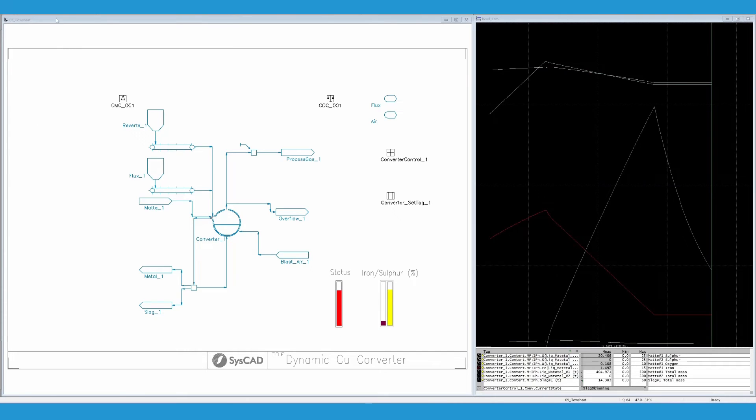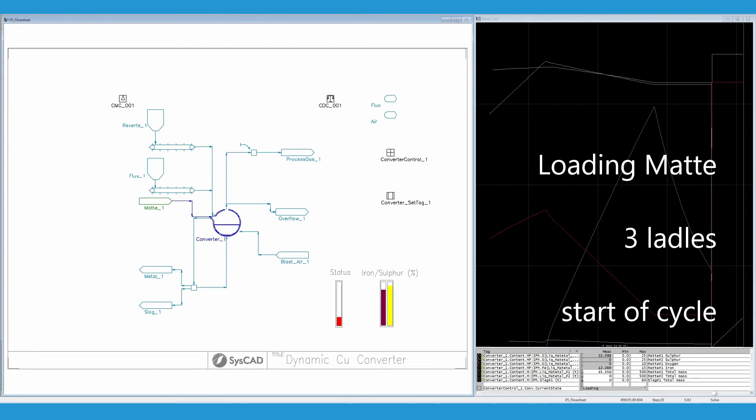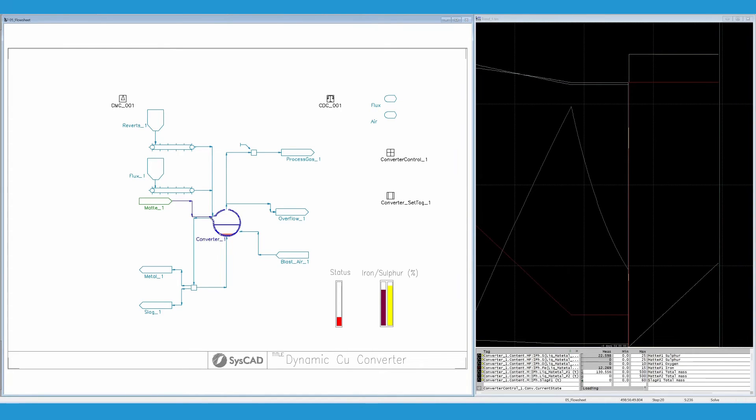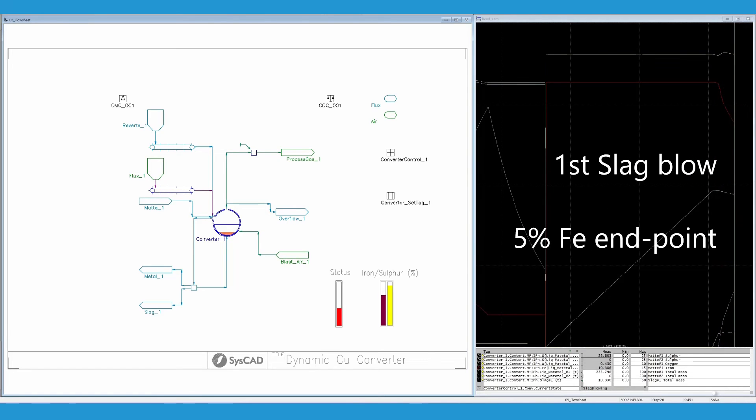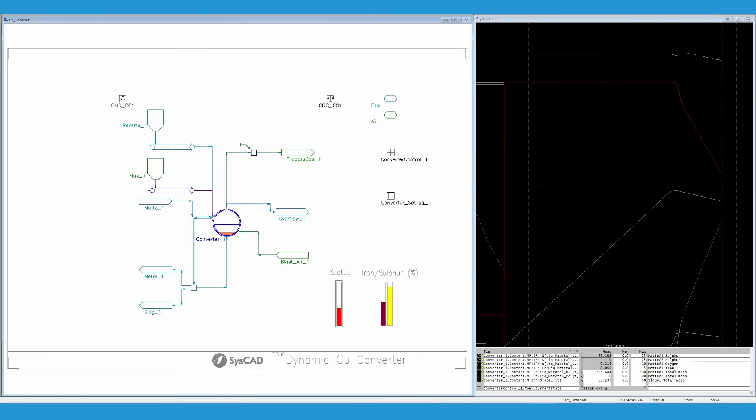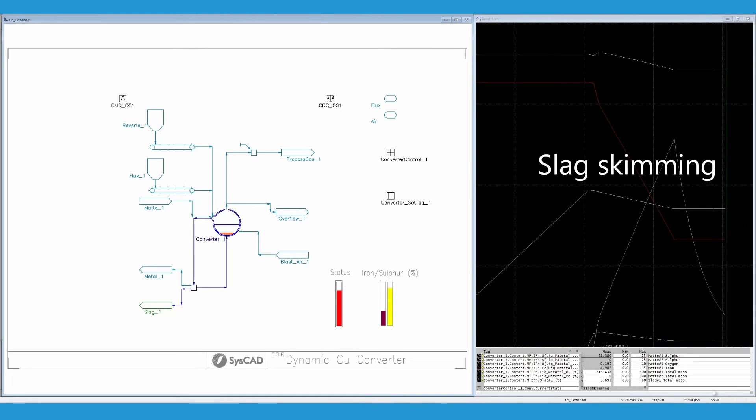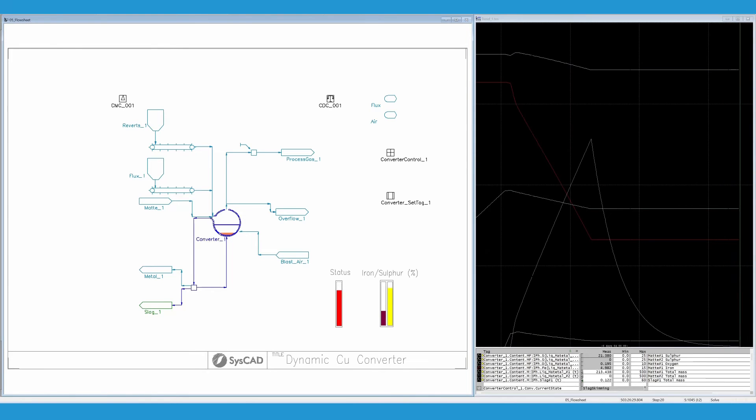This animation shows the model running during an entire cycle. The sequence of steps is pre-programmed as just described, where the various input and output streams interact with the main ChemApp tank unit representing the converter. In this example, the calculation mode is set to fixed temperature. However, the ChemApp tank also supports enthalpy target mode, where the reactor temperature is calculated based on a defined heat loss value. The sequence starts by loading three ladles of matte. The live trend on the right-hand side shows some of the calculated variables, with amounts of matte containing the converter in white, percentage iron in matte in red, percentage sulfur in matte in yellow.